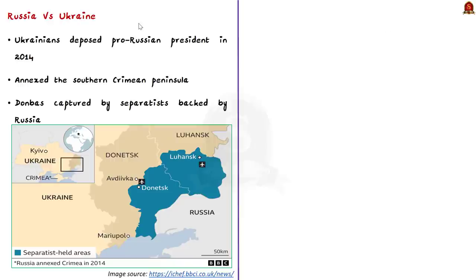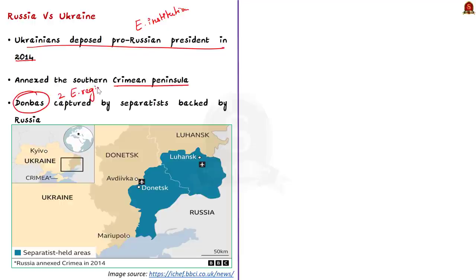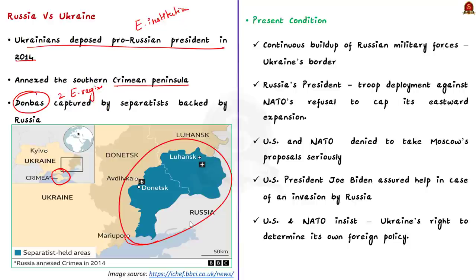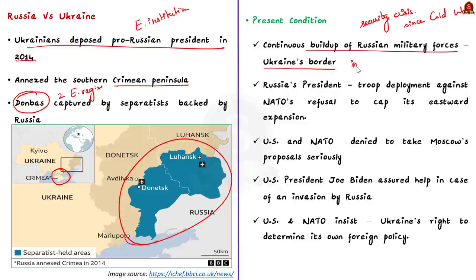Russia has long resisted Ukraine's move towards European institutions. When Ukrainians removed their pro-Russian president in 2014, Russia seized and annexed the southern Crimean Peninsula from Ukraine. Ukraine's two eastern regions collectively known as Donbass were captured by separatists backed by Russia. Russia's aggression in Ukraine has triggered the greatest security crisis in Europe since the Cold War. Though the US and its allies took significant punitive actions against Russia during the seven-year conflict, they made little headway in restoring Ukraine's territorial integrity. The continuous buildup of Russian military forces along Ukraine's border has created fears of a large-scale invasion.